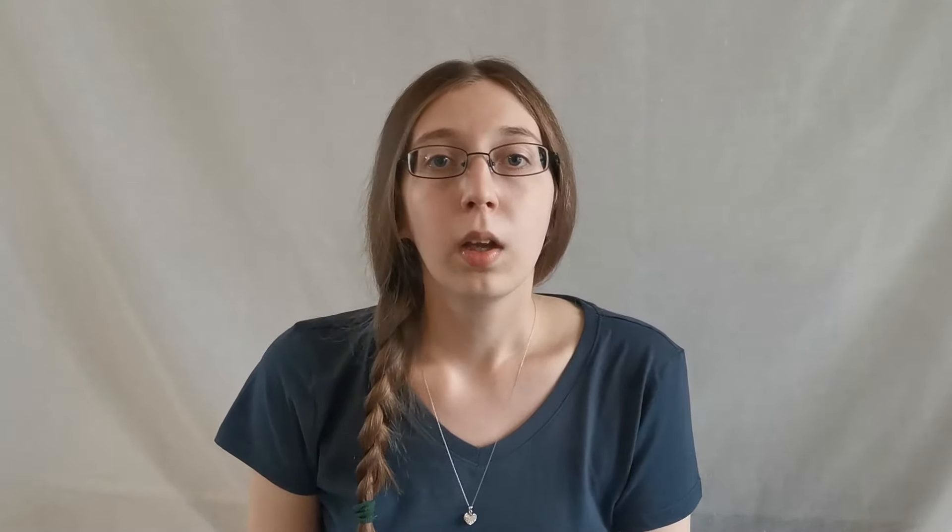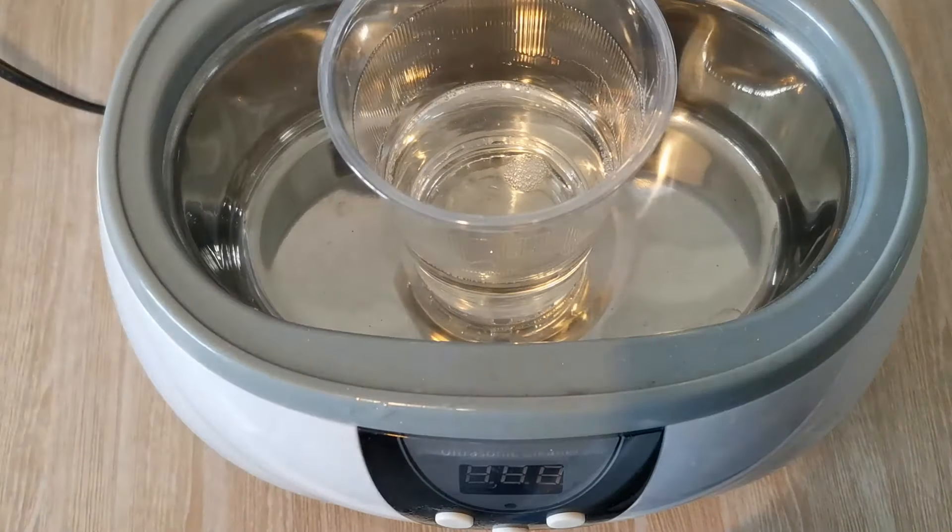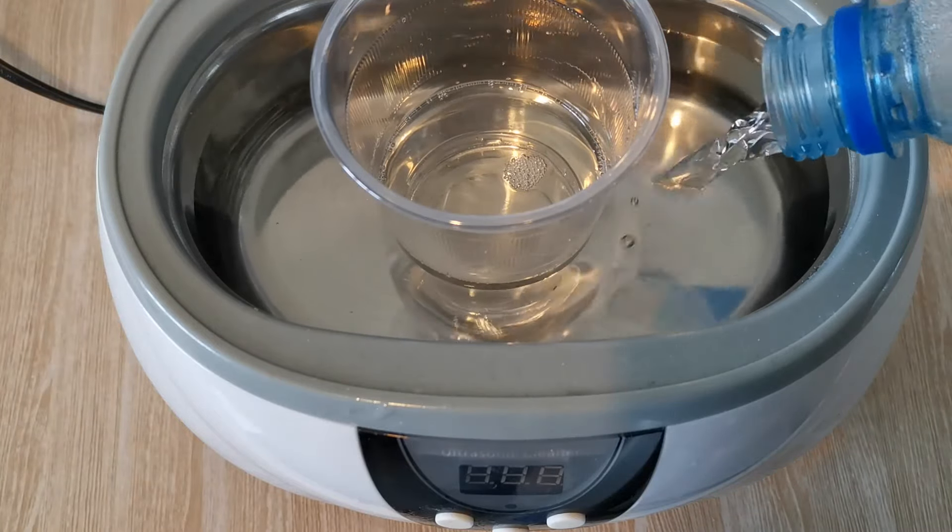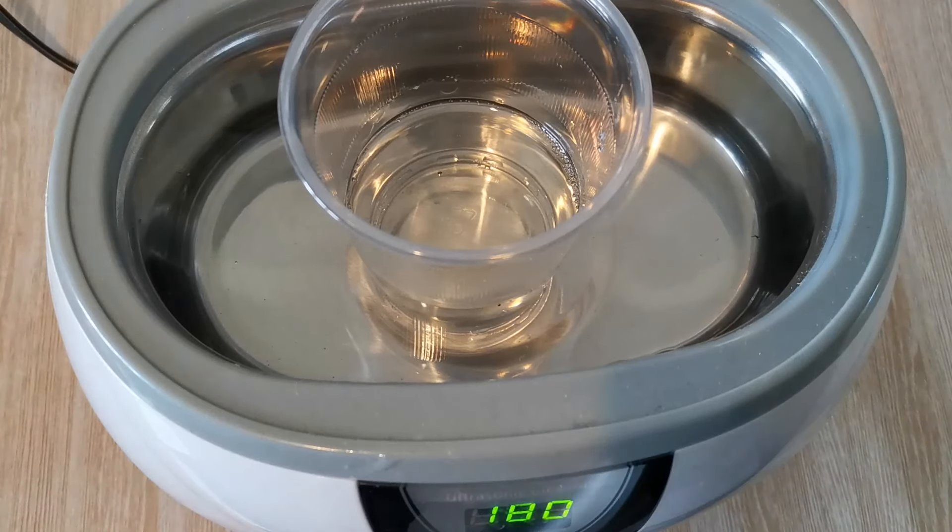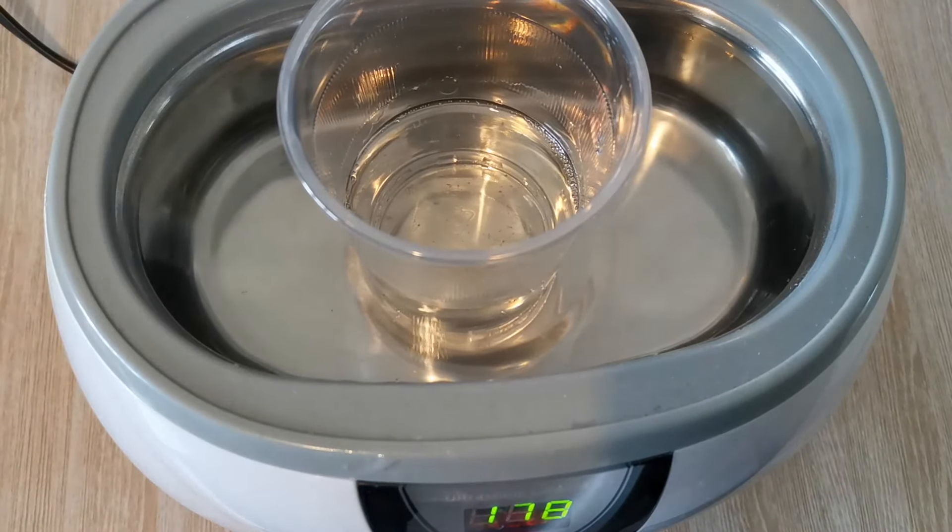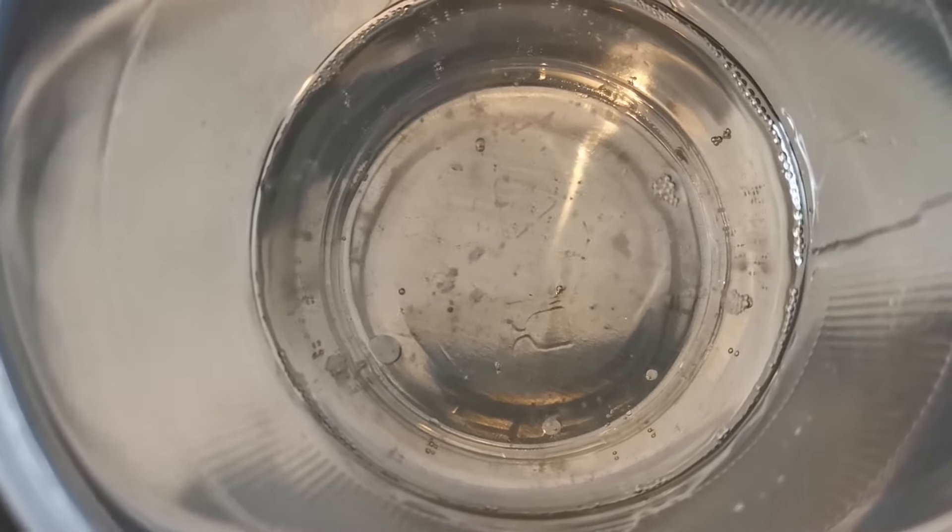An ultrasonic cleaner is one of the cheaper options for something that will actually force the bubbles out of the resin, and they work surprisingly well. All you have to do is place your resin cup inside the chamber and fill it with water at least as high as your resin goes, and turn it on. Depending on how much resin you're mixing, you might also need to weigh the cup down with something on the top of it, so that it doesn't float. As you can see, the ultrasonic waves slowly force the bubbles out of the resin, and by the end of it you're left with a clear, bubble-free resin.